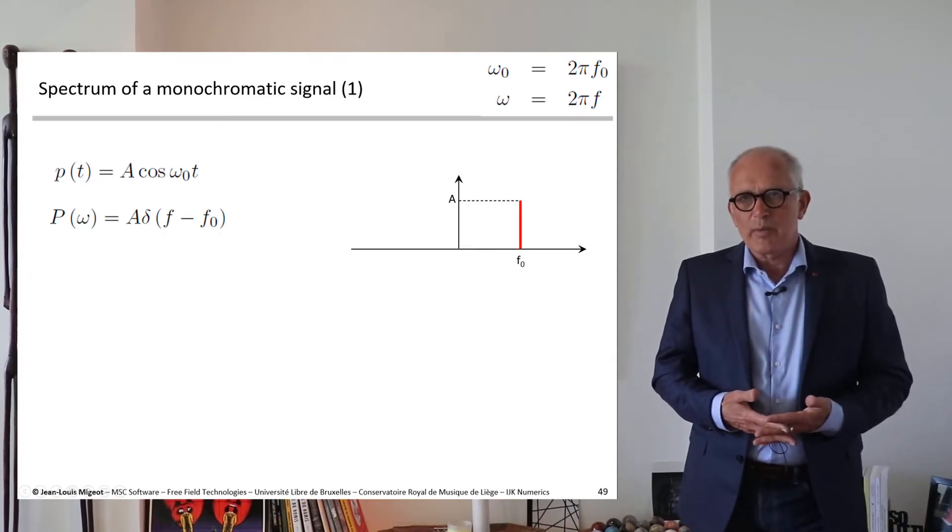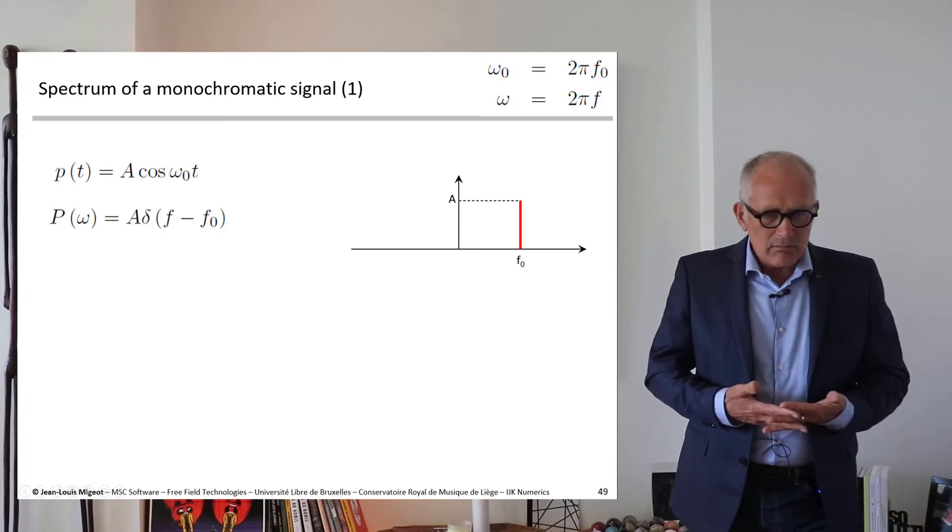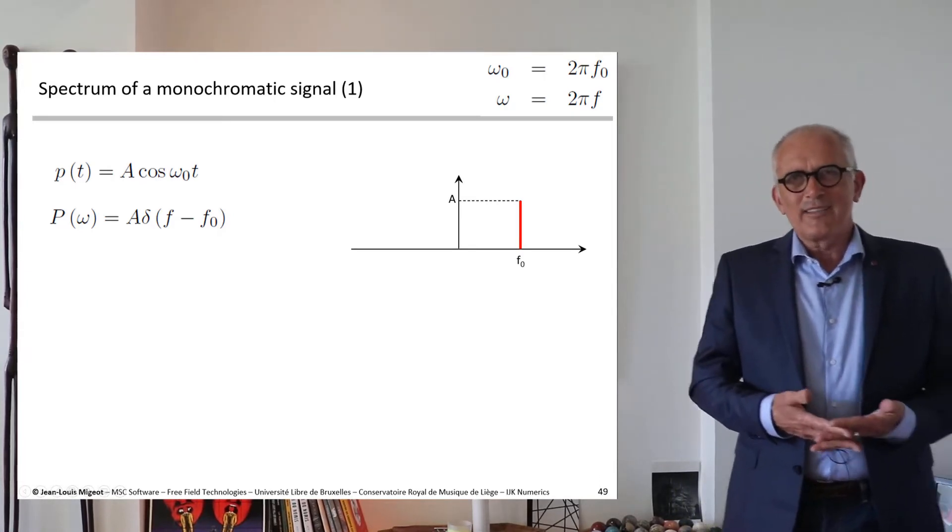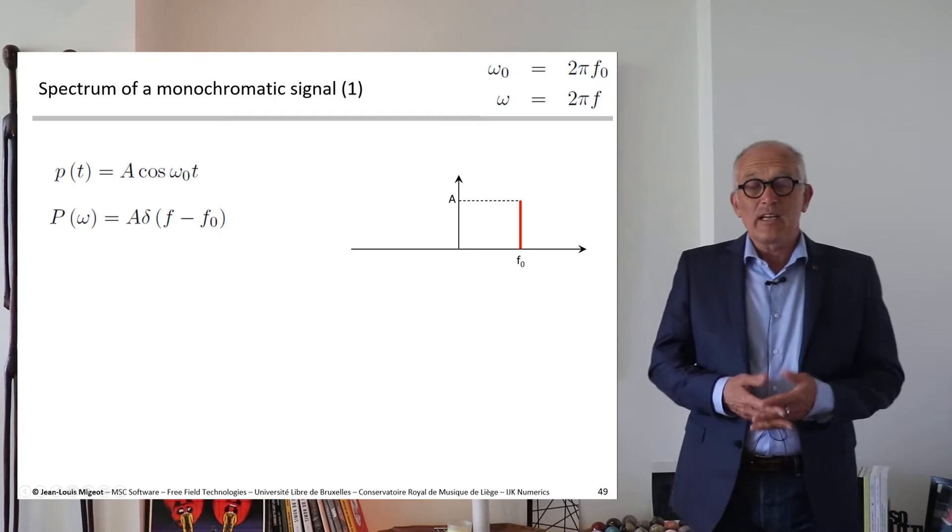So we just have one spectral line and this looks good, but in fact this is not valid.